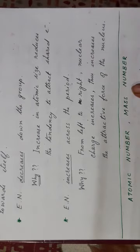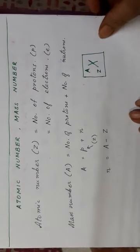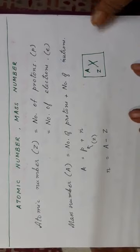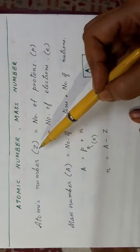Now we are coming to next to the atomic number and mass number. This concept of atomic number and mass number you have already done before. Now see, atomic number is represented by Z.